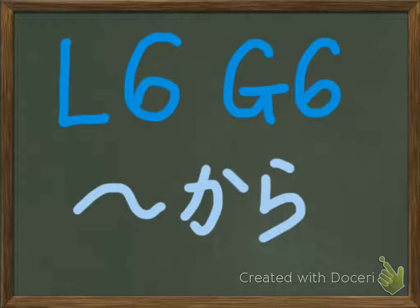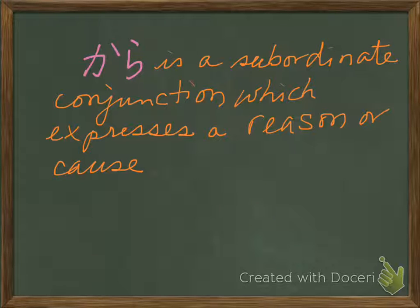Konnichiwa. Lesson 6, Grammar 6. Today, we study kara. Kara is a subordinate conjunction which expresses a reason or cause.